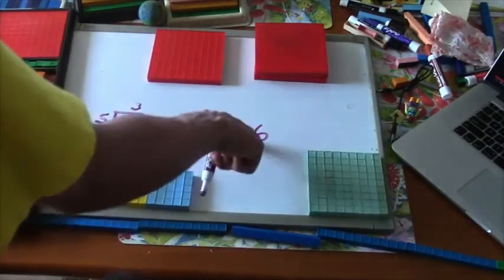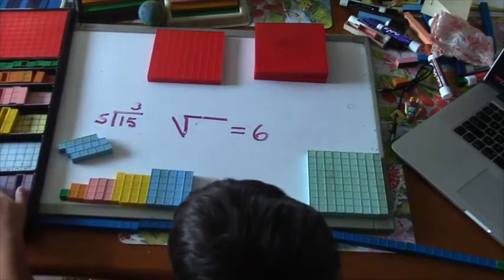I know what the next number is. Can you build me a square where one side is 6? So the square root of what number is 6?